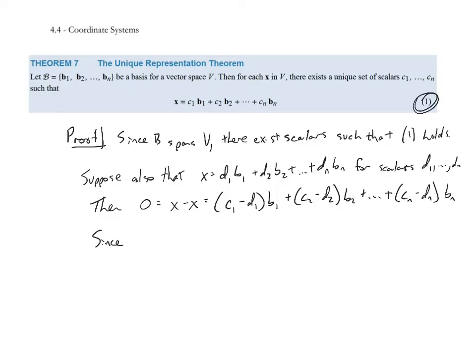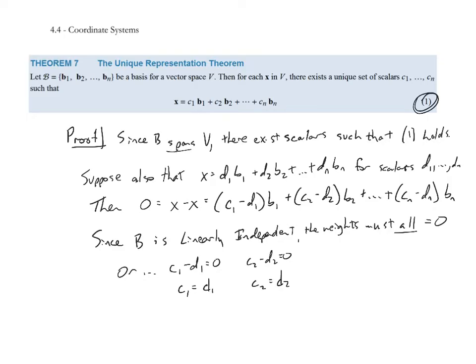Since the other property of a basis is that it spans the vector space, but also since B is linearly independent, then the weights must all equal 0. Or to put it differently, c₁ - d₁ = 0, which tells me c₁ = d₁. Or c₂ - d₂ = 0, that is c₂ = d₂, all the way up to cₙ - dₙ = 0, so cₙ = dₙ.